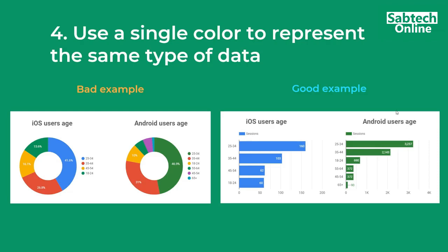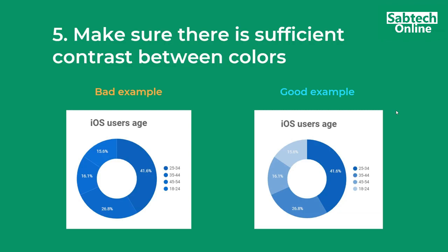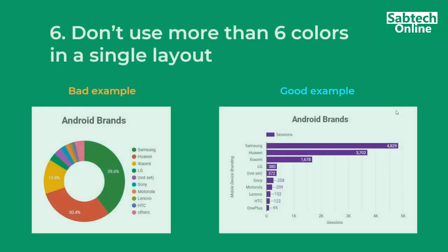Tip four: use a single color to represent the same type of data. When comparing iOS and Android, use the same color to describe each consistently, rather than too many colors which become hard to interpret. Tip five: make sure there is sufficient contrast between the colors — try to differentiate from one dimension to another. It becomes more visual when there is a difference in contrast, as shown in the good example on the right.